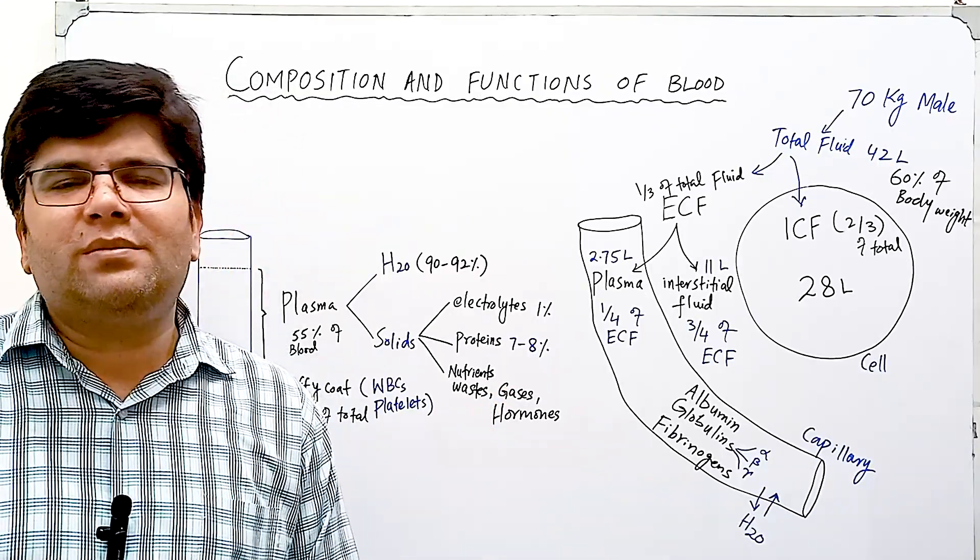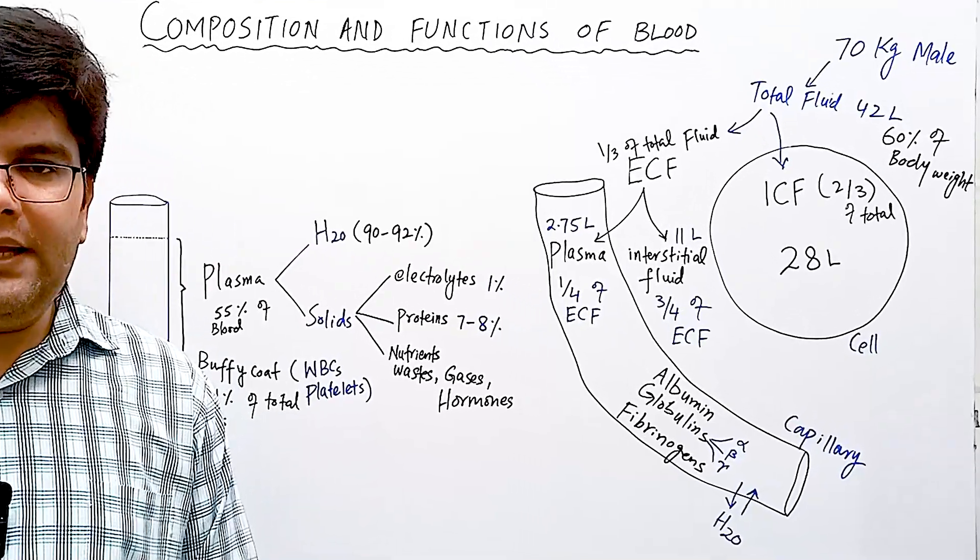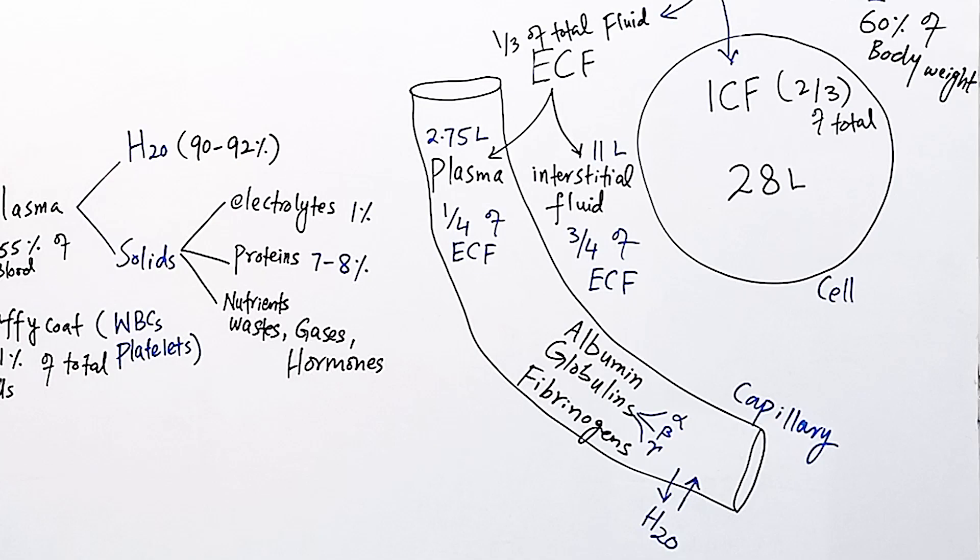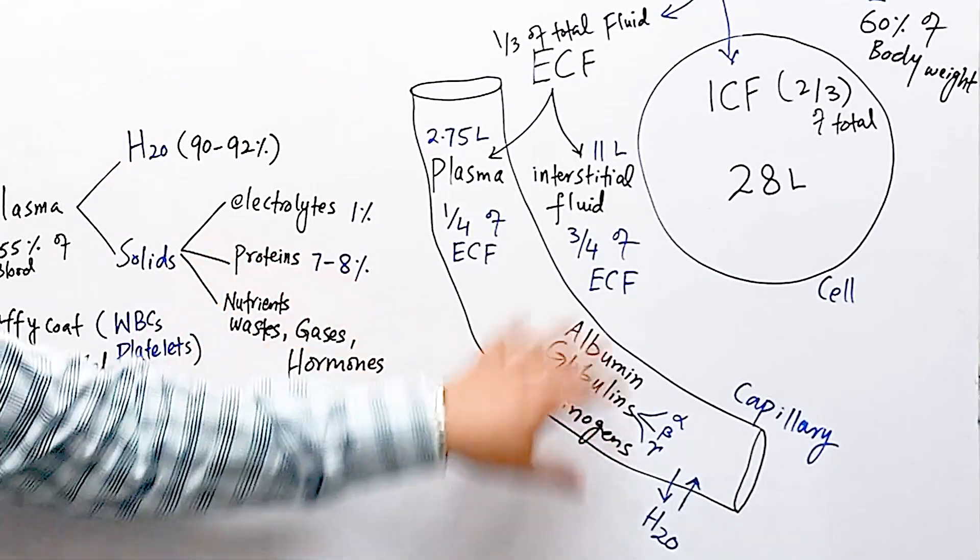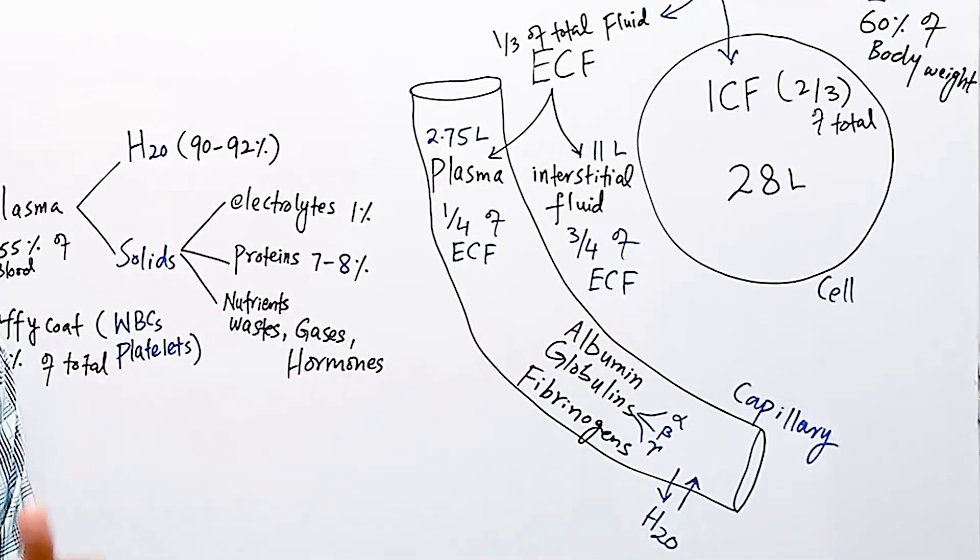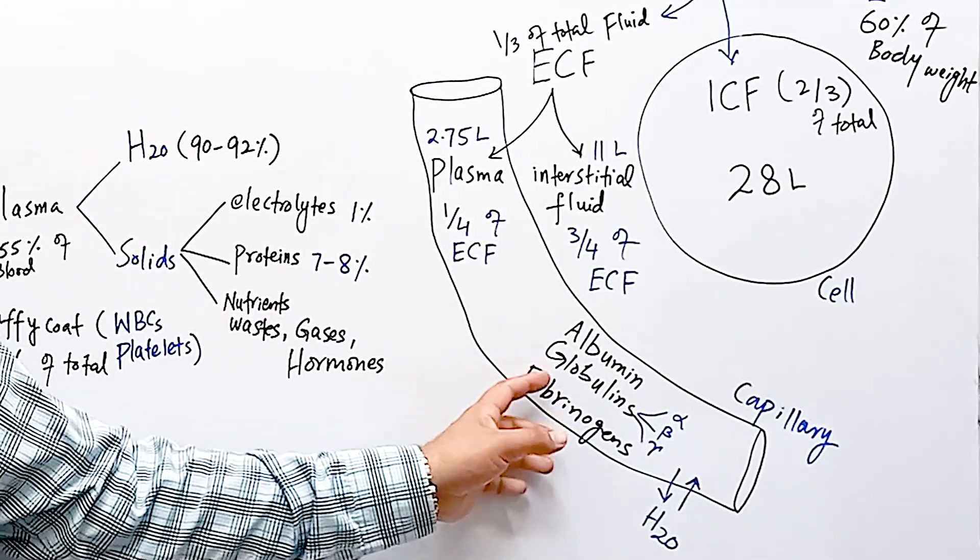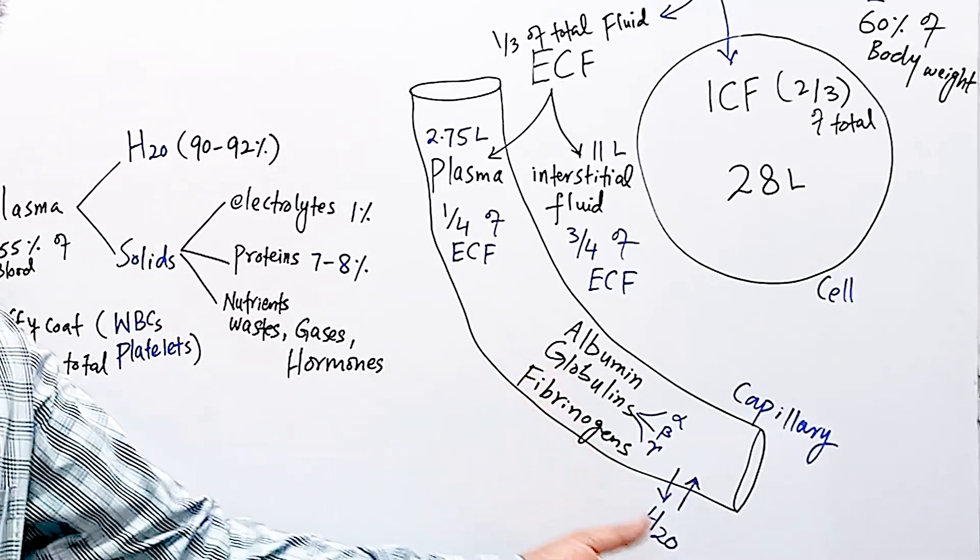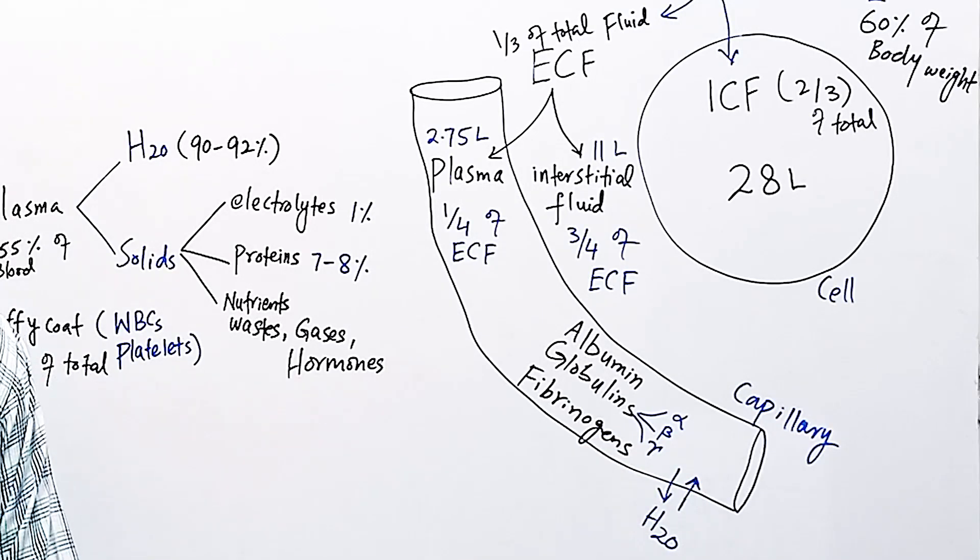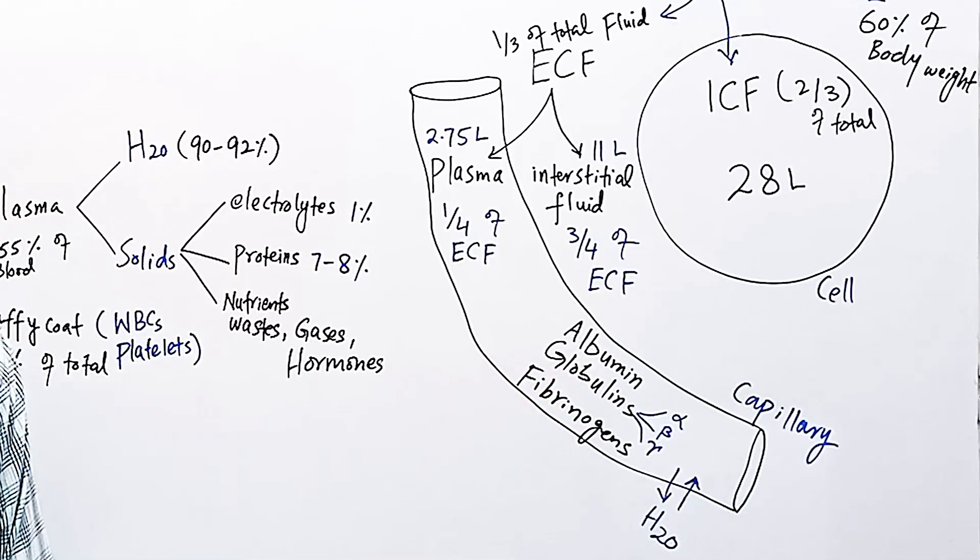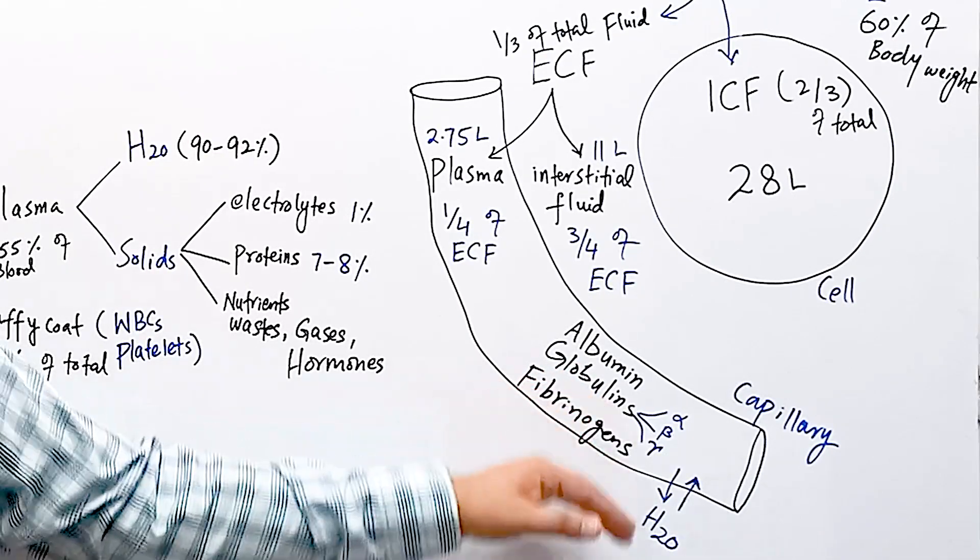One important function of plasma proteins is that they provide plasma colloidal osmotic pressure. The total value is 28 mm of mercury, most provided by albumin. Two-thirds of total pressure is provided by albumin and one-third by globulin. Plasma proteins are large colloidal molecules dispersed in plasma that attract water. These proteins don't come out of capillaries being large in size, so they attract water and keep most water within capillaries.